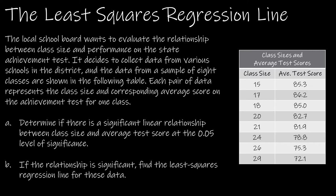We're going to determine is there a significant linear relationship at the 0.05 level of significance between class size and average test score. We have a local school board that wants to evaluate the relationship between class size and performance on the state achievement test. The data from a sample of eight classes are shown in the table. First we're going to take a look at is it a significant linear relationship, which means we're going to graph it and take a look at whether or not it looks linear, and then we're going to perform our hypothesis test.